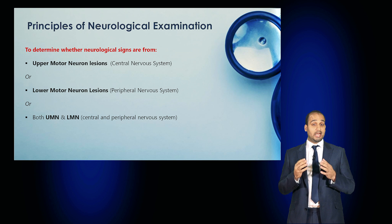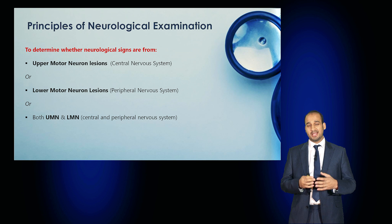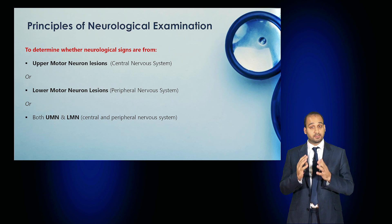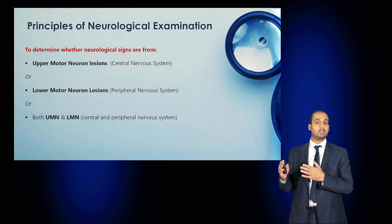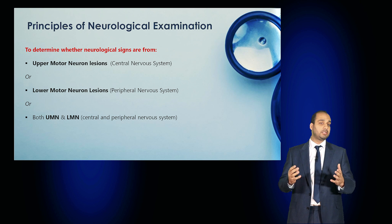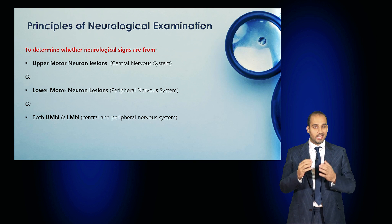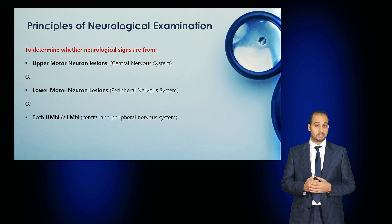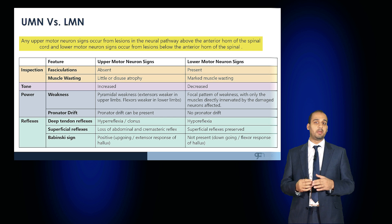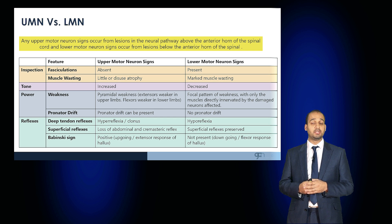The examination allows you to determine whether any neurological signs arise from upper motor neuron lesions — i.e. central nervous system lesions — or lower motor neuron lesions from peripheral nervous system damage, or a mixture of both. Upper motor neuron signs occur from lesions in the neural pathway above the anterior horn of the spinal cord, and lower motor neuron signs occur from lesions below the anterior horn of the spinal cord.